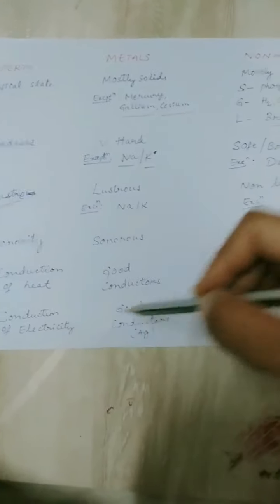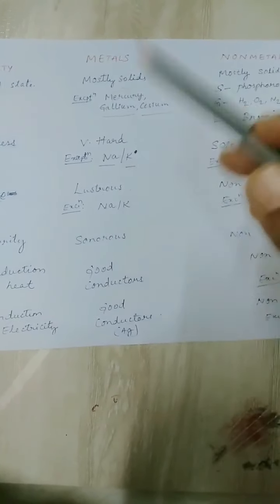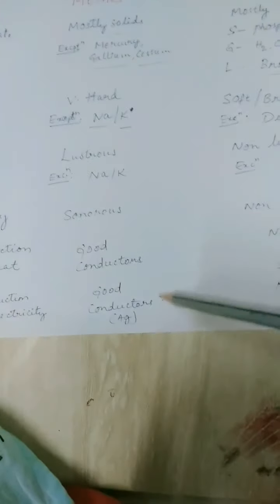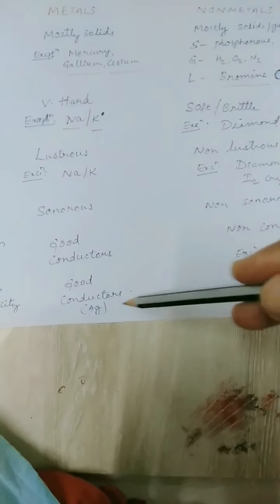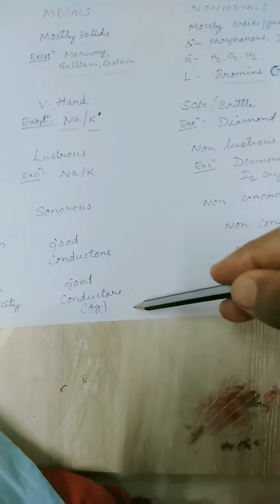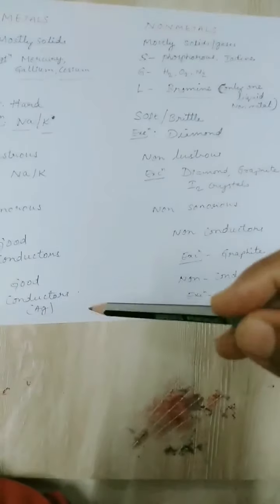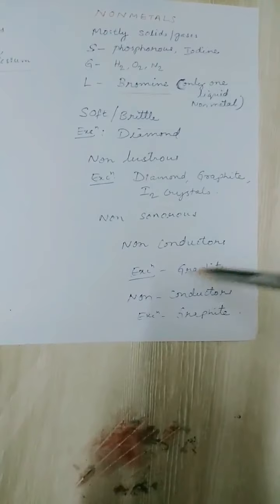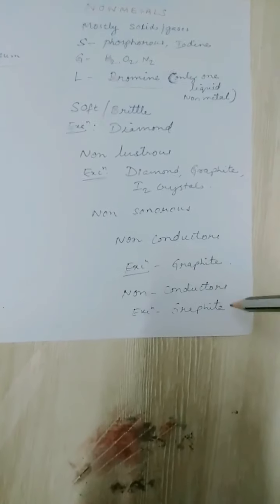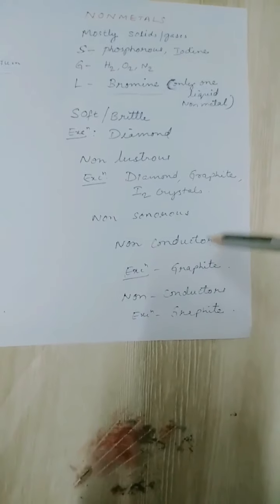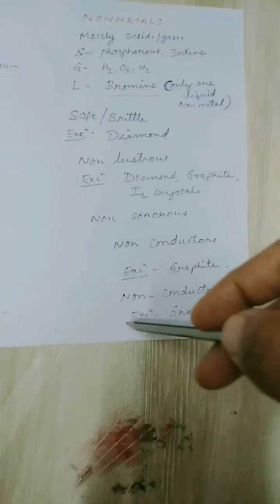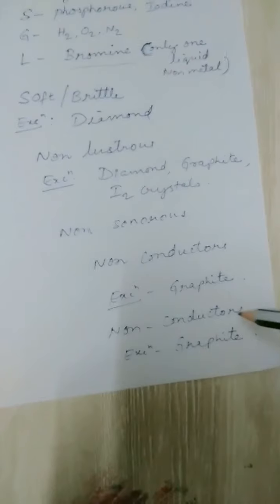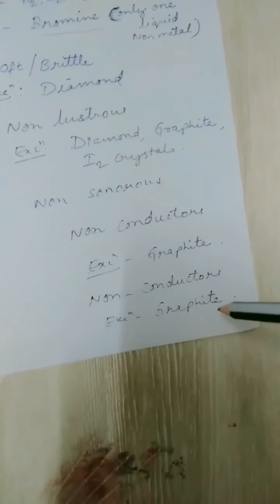Coming to conduction of electricity — metals are very good conductors of electricity and allow electric current to flow through them very easily. Silver is the best conductor of electricity. Non-metals are non-conductors of electricity and do not allow electricity or heat to flow through them — examples include glass, plastic, and wood. But there is an exception: graphite is the non-metal which conducts electricity.